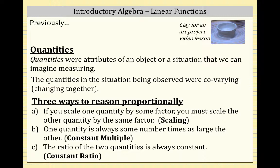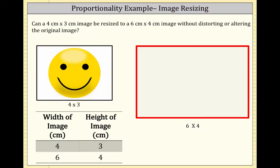So what we're going to do is take a look at another example: image resizing. Can a 4 cm by 3 cm image be resized to a 6 cm by 4 cm image without distorting or altering the original image? There you see an image of happiness. What we want to do is see if this is possible, and we're going to explore the three perspectives of proportionality.